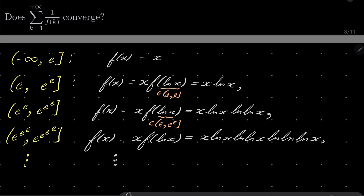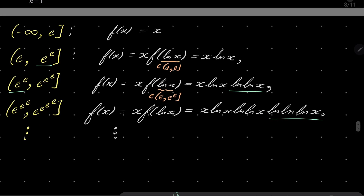Now, what can be said about this function? Well, first of all it's continuous. The only potential sources of problems are the boundary points, for example e or e^e. But notice that at x equals e^e, the last term is always 1 at the left bound of these intervals. For example, natural log of natural log of e^e equals 1, so the values match exactly from both sides. So continuity holds.